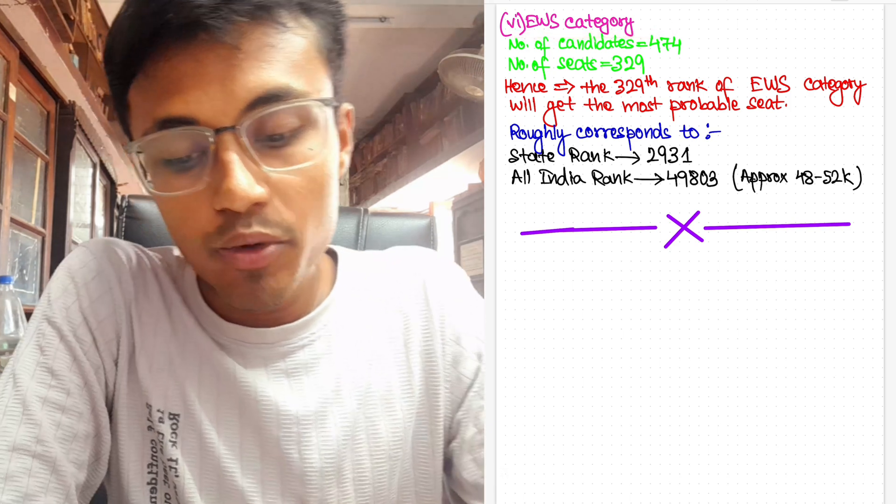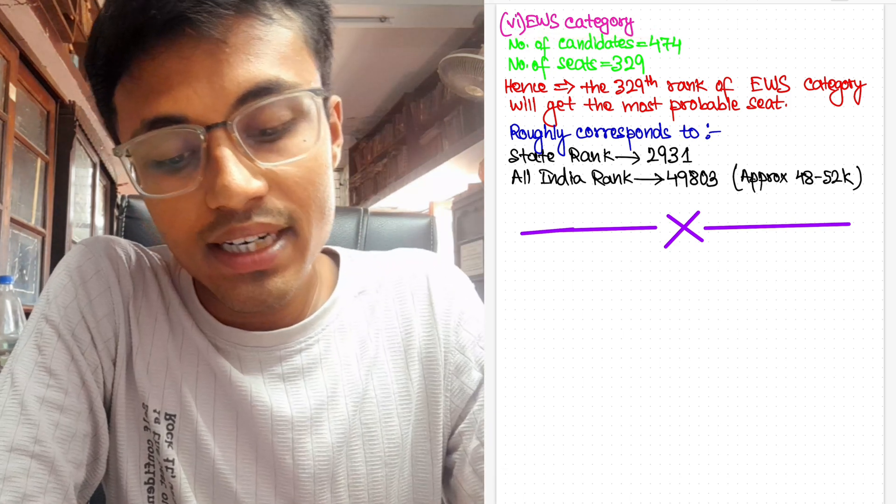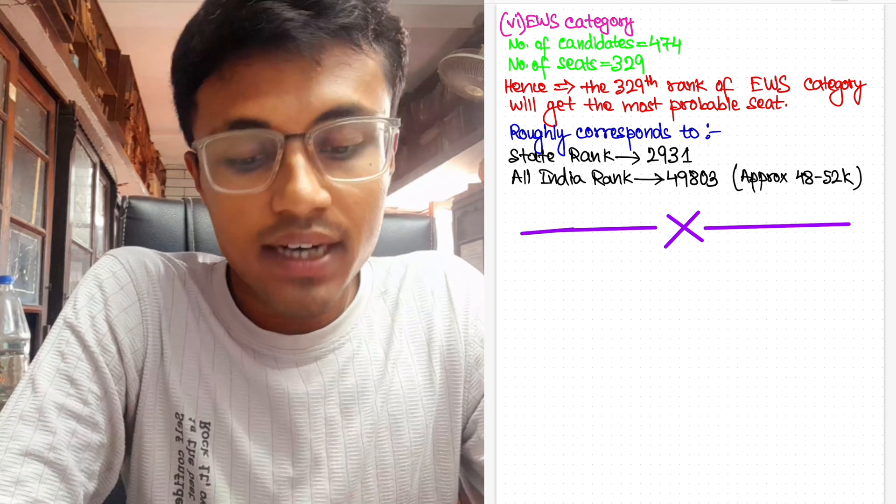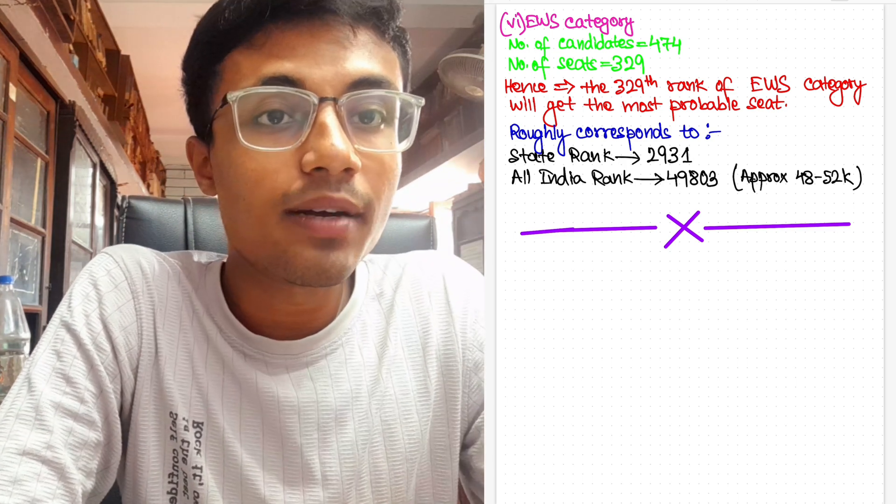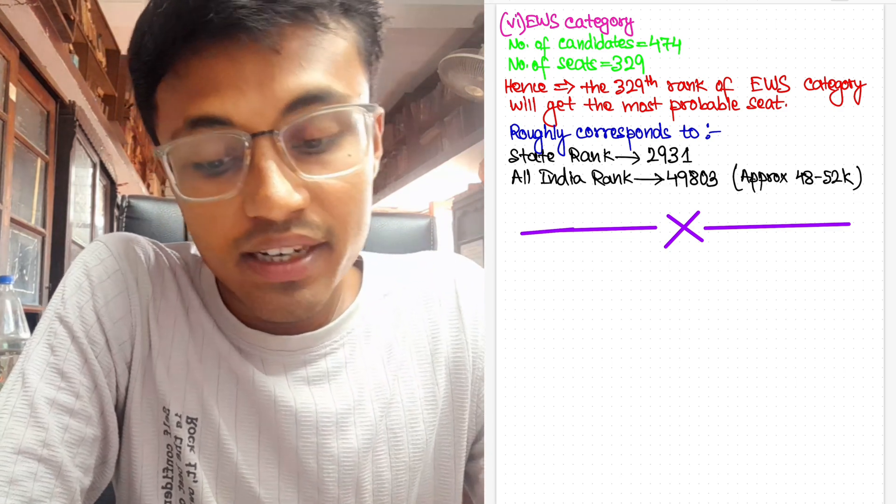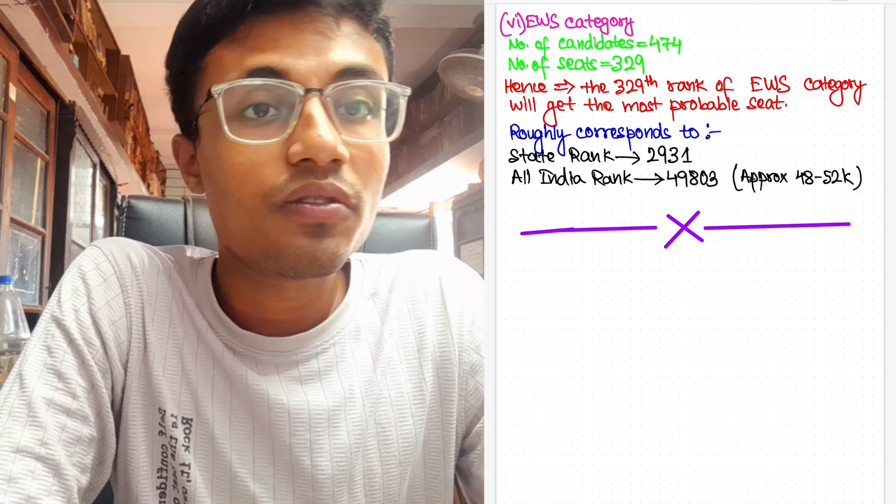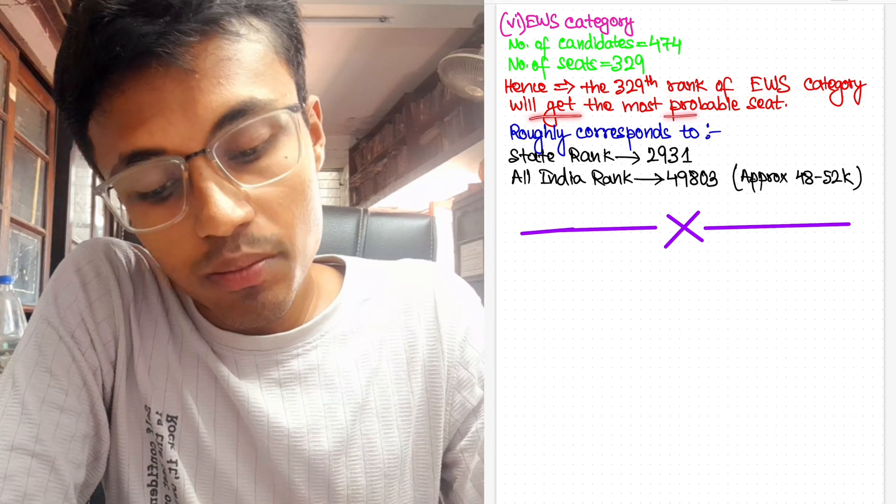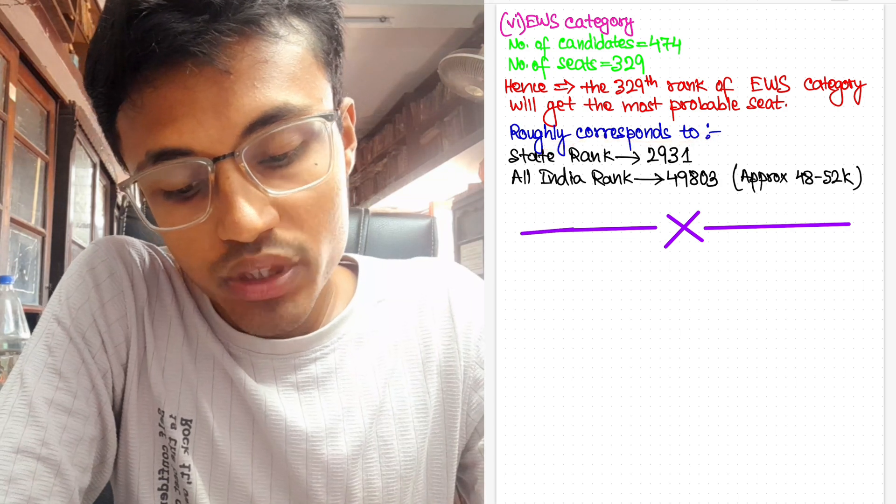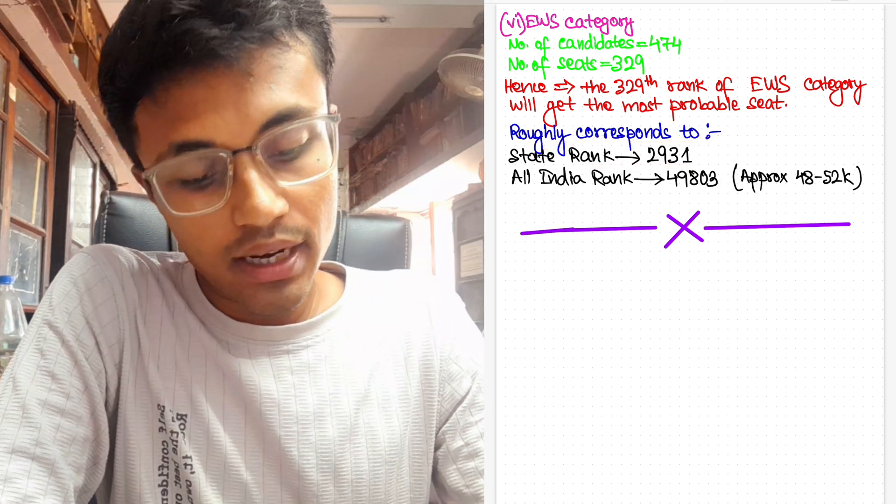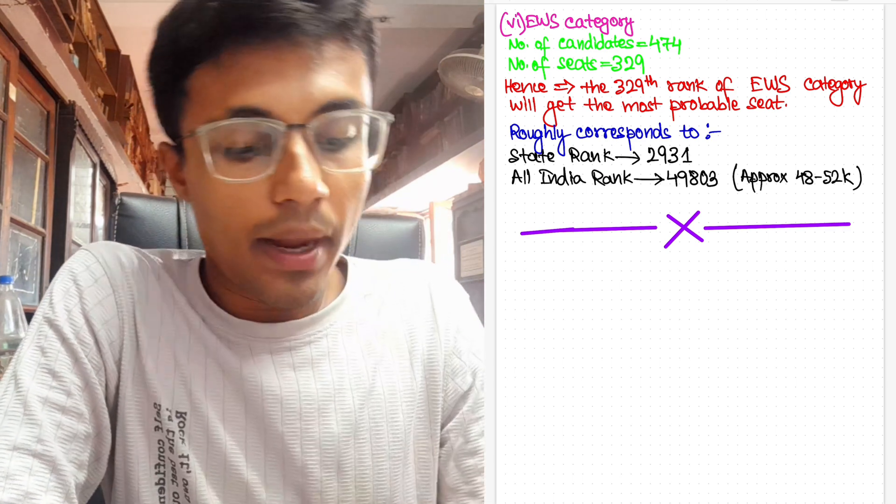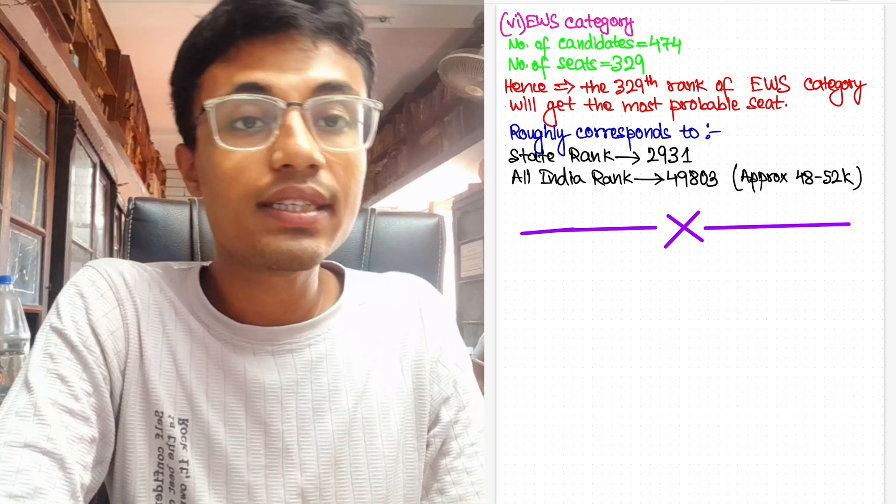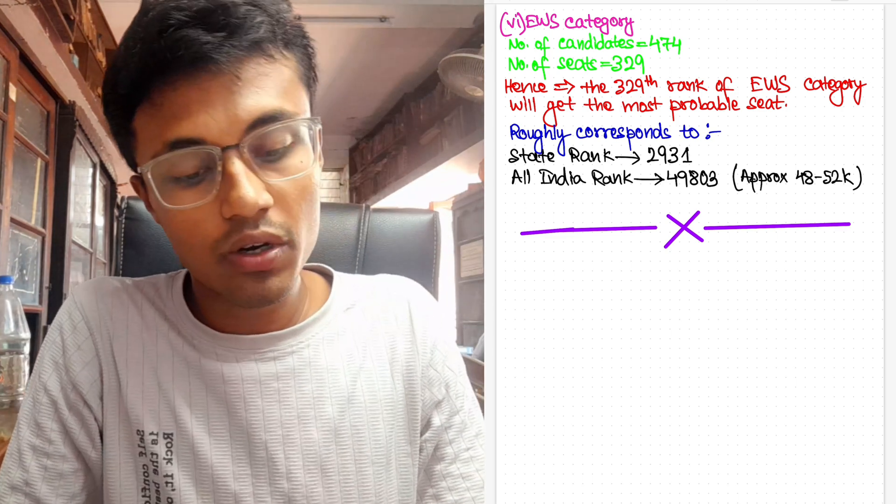Moving ahead for the EWS category at last, the number of candidates are 474 and the number of seats are 329. This year, considering there would be a drastic decrease in the cutoff for EWS because the difference between number of candidates and the number of seats is very less, the 329th rank of EWS category will get the most probable seat. So that roughly corresponds to state rank 2,931 and All India rank 49,803. My approximation would be anything between 48,000 to 52,000 would get the seat under EWS category for government MBBS college.